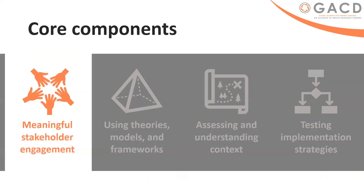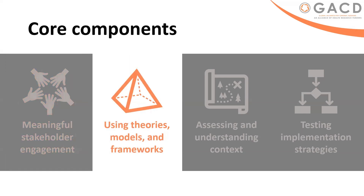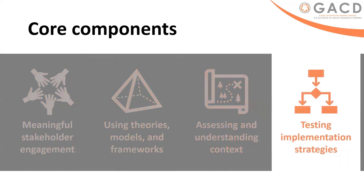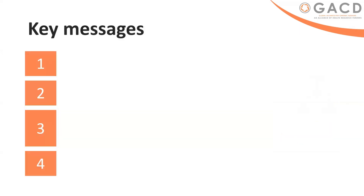To summarise, there are four key components of implementation research and science that are a good starting point: meaningful stakeholder engagement, using theories, models and frameworks, understanding context, and testing implementation strategies. These are all very important, and we will go into more detail on each of those components as you move through this fundamentals program over the rest of the program and the following lectures.